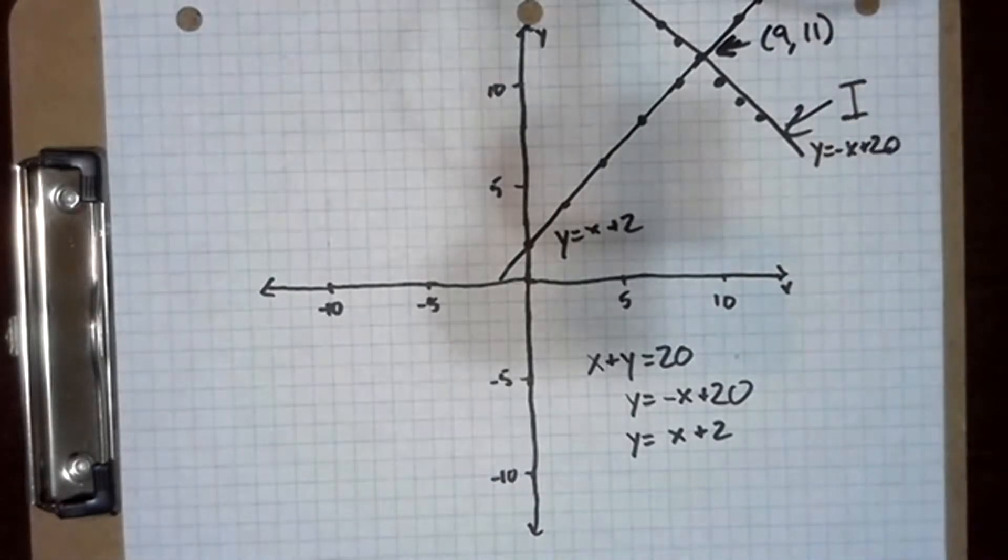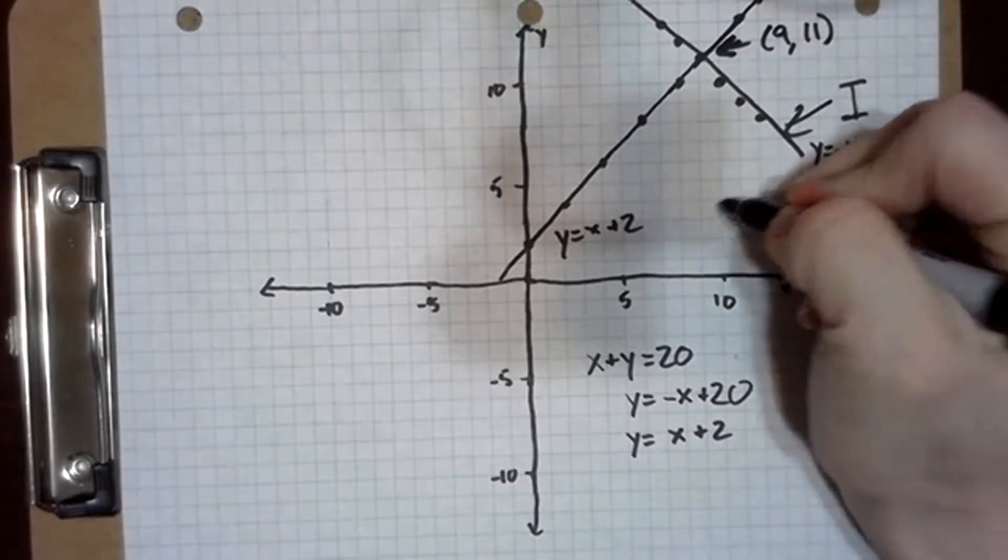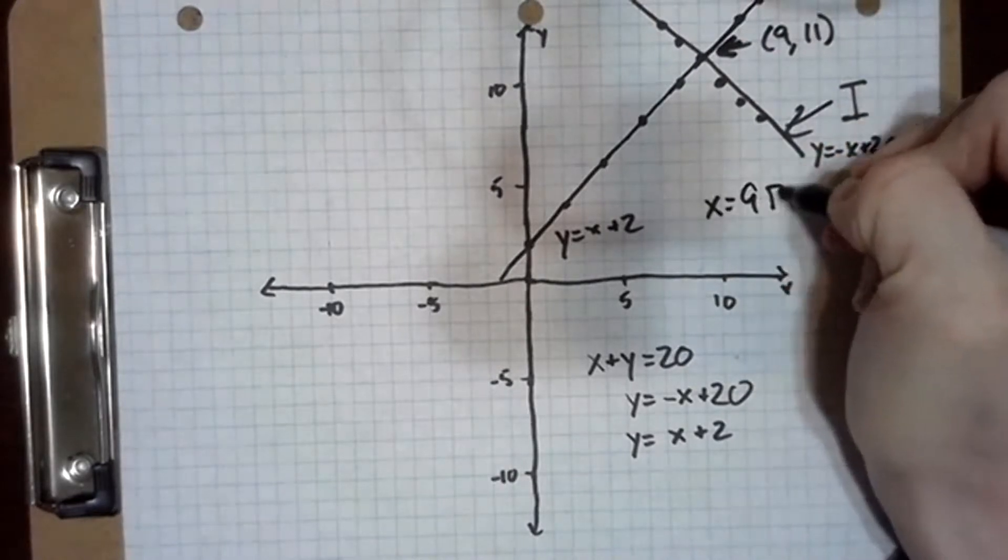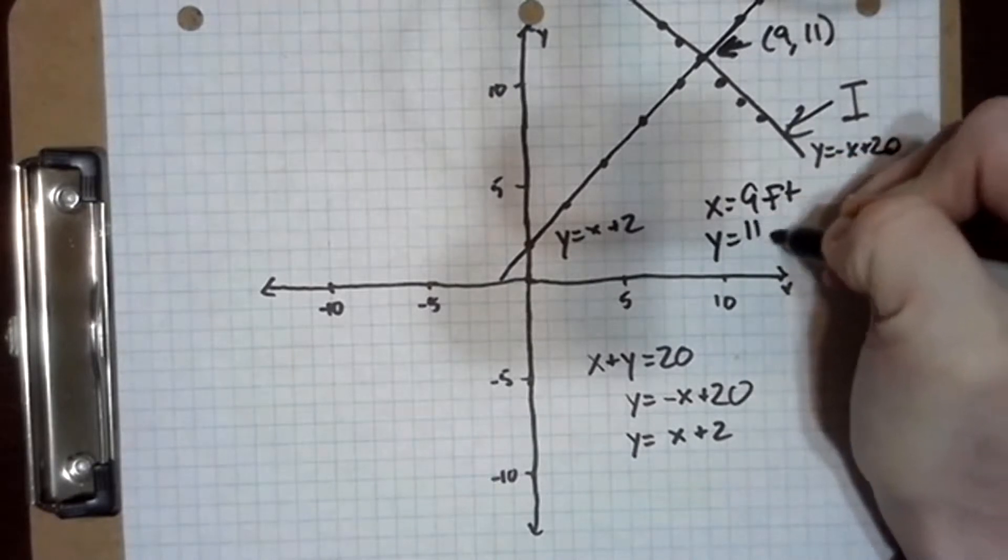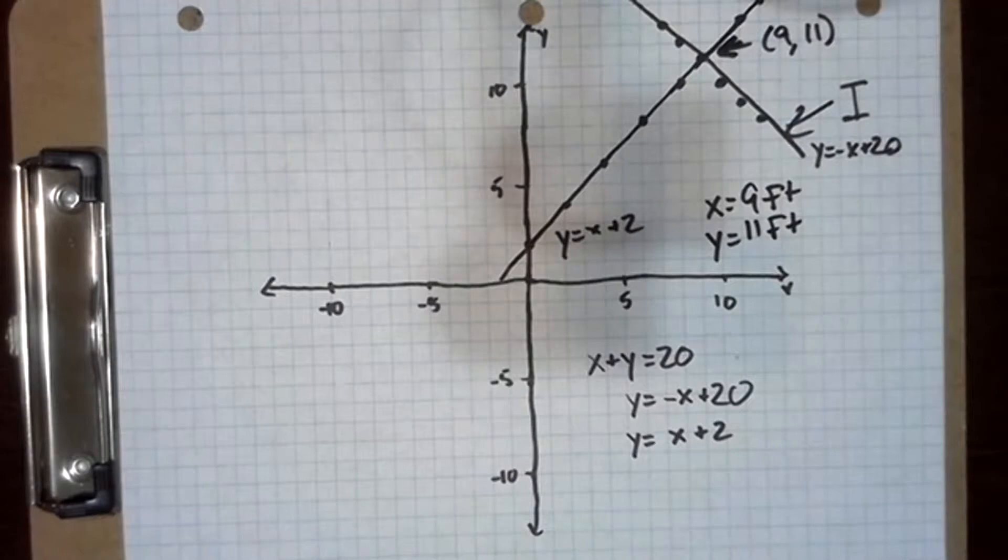So the solution to this system of equations is board x is 9 feet long and board y is 11 feet long. All right, let's move on to our other problem.